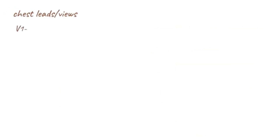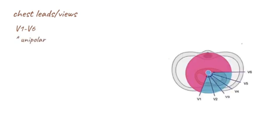There are six chest leads or views: V1, V2, V3, V4, V5, and V6. These are unipolar leads as they only have one associated electrode. The positive pole is the electrode itself and the negative pole is the center of the heart.